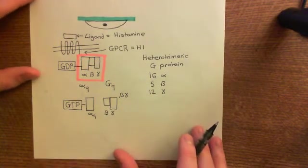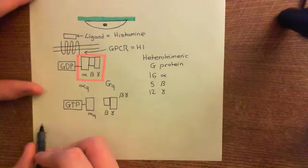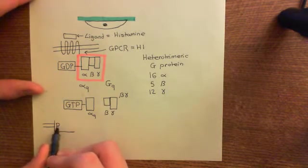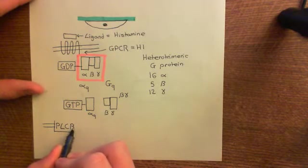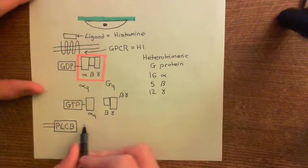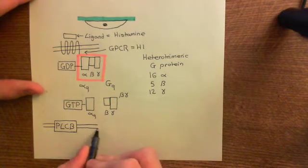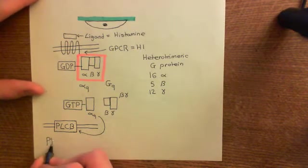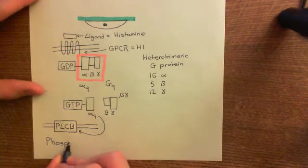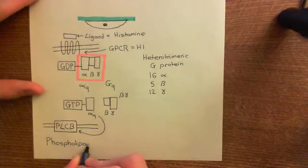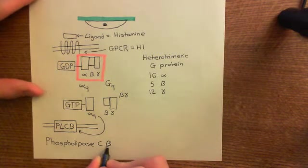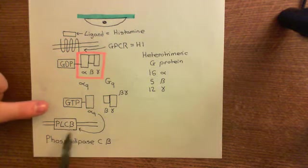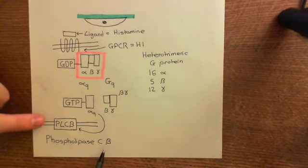Alpha-Q GTP is going to activate another enzyme in the cell membrane — the phospholipid bilayer — known as phospholipase C beta, often abbreviated to PLC-beta. There are many different isoforms of phospholipase C, and the one specifically activated by the alpha-Q GTP complex is phospholipase C of the beta type.